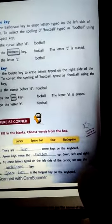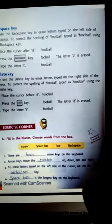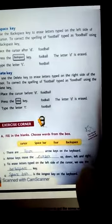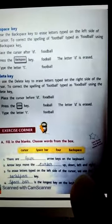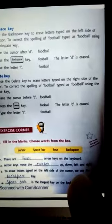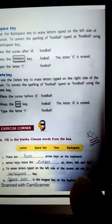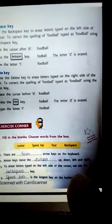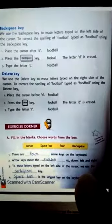Your first blank: there are ___ arrow keys on the keyboard. Four arrow keys. The four arrow keys move the cursor up, down, left and right. Arrow keys move the cursor up, down, left and right.